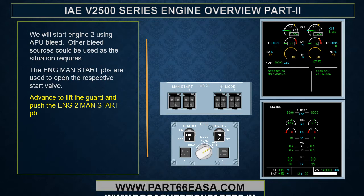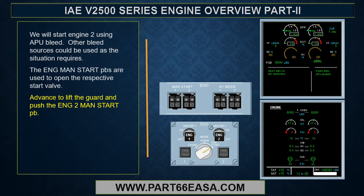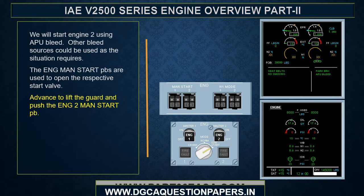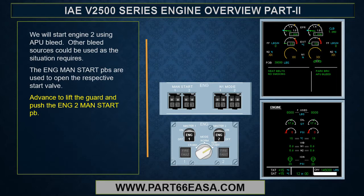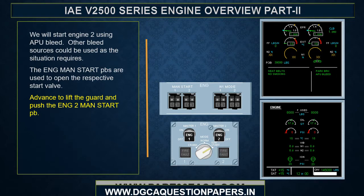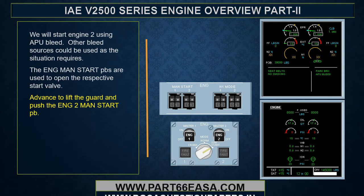We will start engine 2 using APU bleed. Other bleed sources could be used as the situation requires. The engine manual start push buttons are used to open the respective start valve. Lift the guard and push the engine 2 manual start push button.